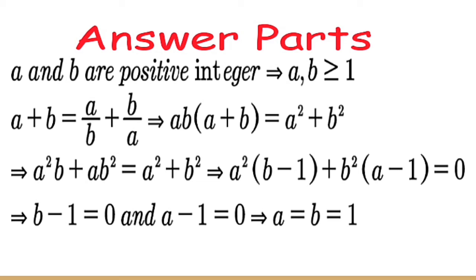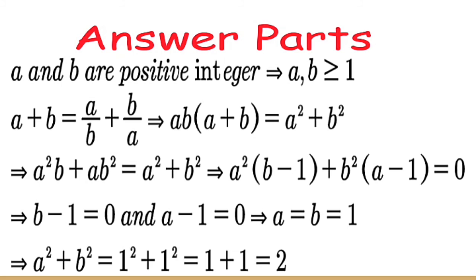That means a equals b equals 1. Therefore a squared plus b squared equals 1 squared plus 1 squared, which equals 1 plus 1, equal to 2. After knowing the process it is simple, but whenever you don't know the process, it is also a difficult question. Have a nice day.